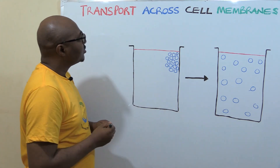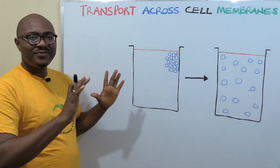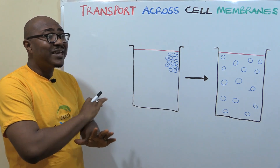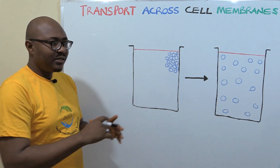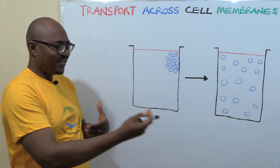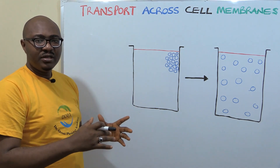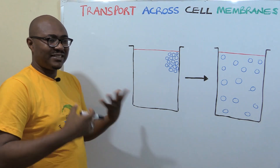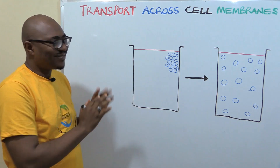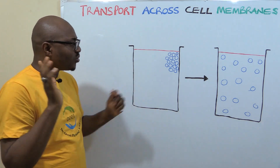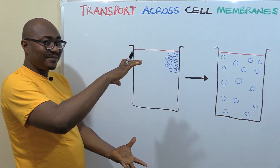Generally in life, without exchange there is a problem — we can't exist without exchange. That's why we have markets and systems of exchange; money was invented to exchange value. Imagine if there were no market and no means of exchange — nobody could survive. The same thing applies to cells: they always need to exchange materials in and out.